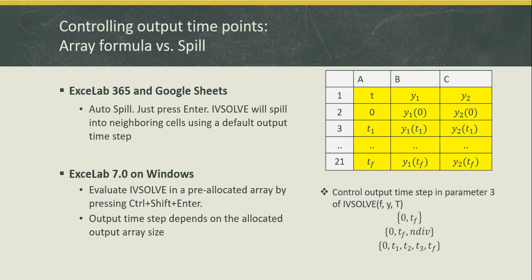The demonstration with IVsolve in ExcelApp 7 on Windows required us to run IVsolve as an array formula. If you are using ExcelApp 365 or Google Sheets, there is a new spill feature that allows you to run IVsolve as a standard formula by simply pressing Enter, and it will expand into neighboring cells. Also, you can control the number of time divisions by specifying a third argument in the time parameter, or specify the exact points you want displayed in the output. In ExcelApp 7 you must allocate a sufficiently large array, but in ExcelApp 365 the solution will automatically expand to satisfy your request.